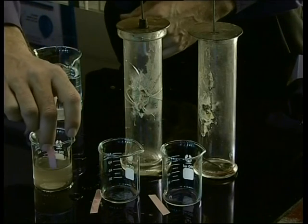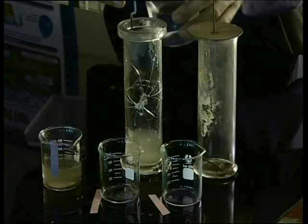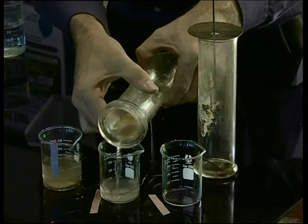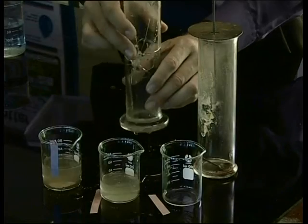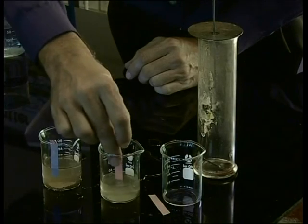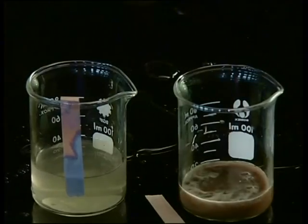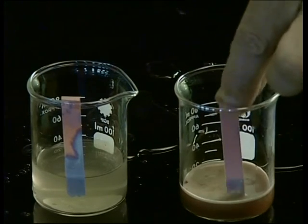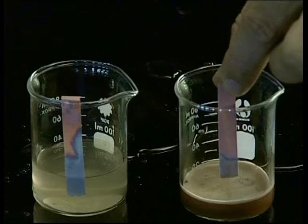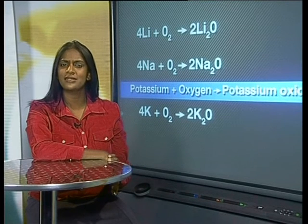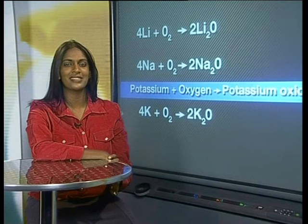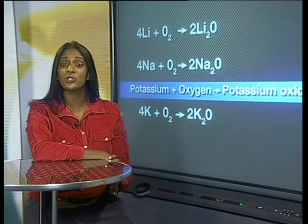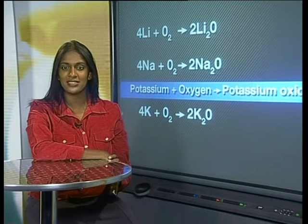This means that the solution is basic. When we repeat the experiment with the sodium oxide and the potassium oxide, we find that the results are the same. Both sodium and potassium oxide dissolve completely in water, and in both instances the red litmus paper turns blue, indicating that both solutions are basic. But what happens to a chemical when it dissolves in water to form a basic solution? A chemical reaction takes place — the alkali metal oxides react with water to form the product metal hydroxide.